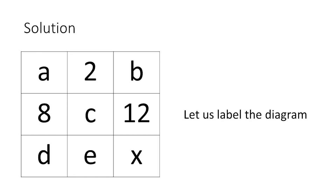Now let us discuss how we would be able to solve this problem. First, let us label the six unknown values as A, B, C, D, E, and X — where X is the target of our question.